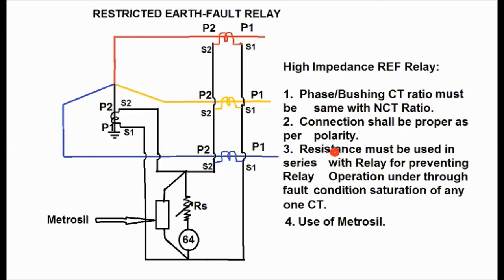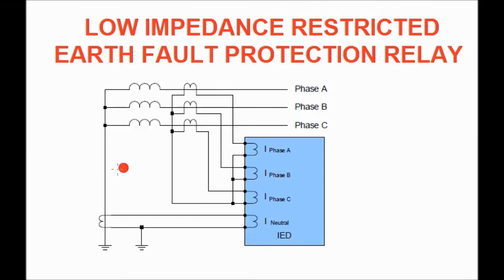The condition for using the high impedance type is that all the phase CT ratios must be the same as the neutral CT ratio. If the phase CT or bushing CT ratio is not the same as the neutral CT ratio, we cannot use the high impedance type restricted earth fault relay — in that case we must use the low impedance type restricted earth fault relay.